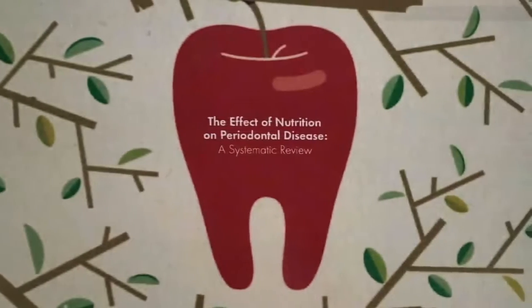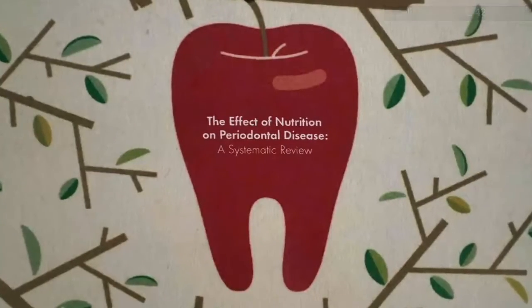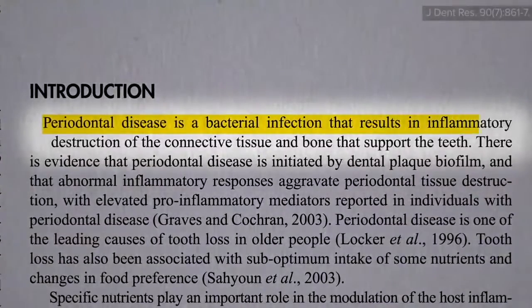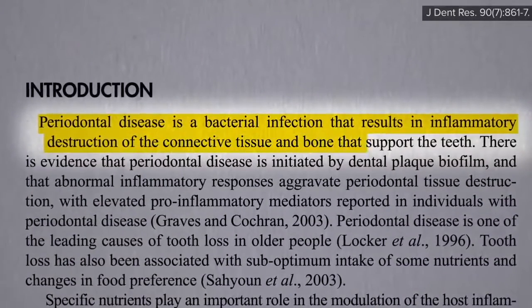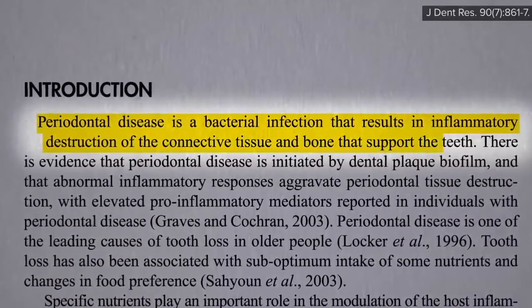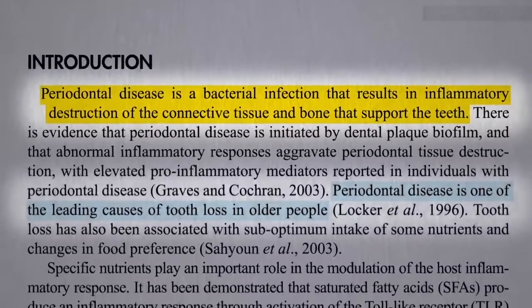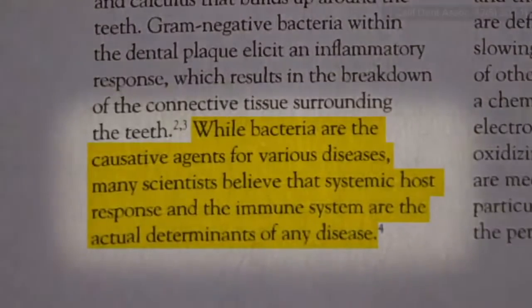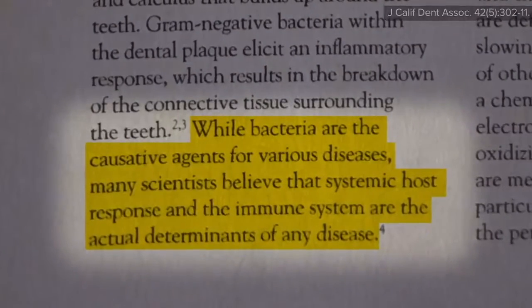What's the effect of nutrition on periodontal disease? Periodontal disease is a bacterial infection that results in inflammatory destruction of the connective tissue and bone that supports the teeth, and is therefore one of the leading causes of our teeth falling out. Like most infections, though, how our body responds may play a critical role.